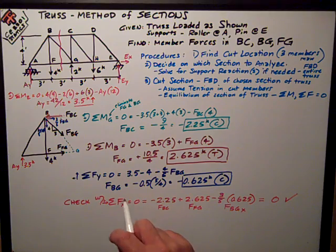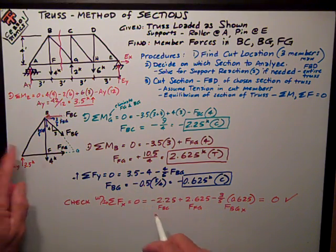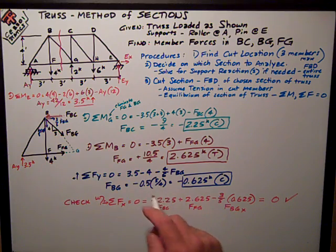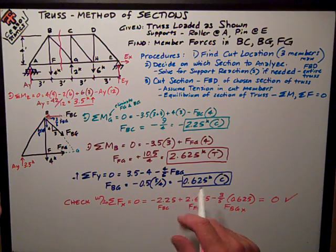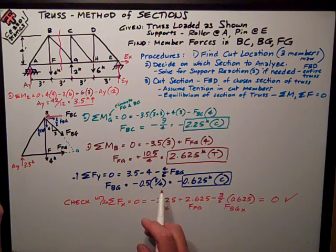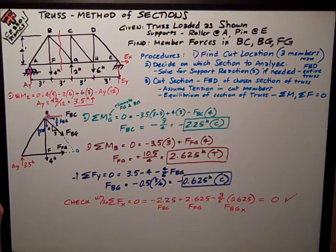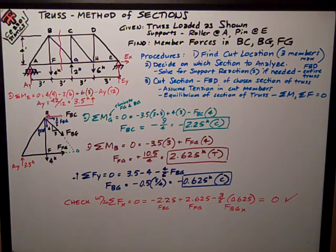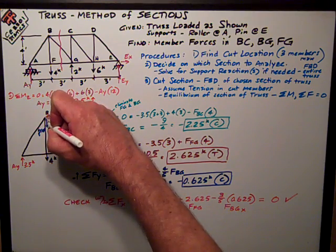And I do a sum of forces in the Y, positive is up, I've got 3.5 up, 4 down, and negative 4-5 is the Y component of FBG. And I solve for FBG, it is equal to a negative number, negative 0.5 times 5 fourths, gives me negative 0.625, which means it's also in compression, which means I need to correct its arrow, and I'm really done.